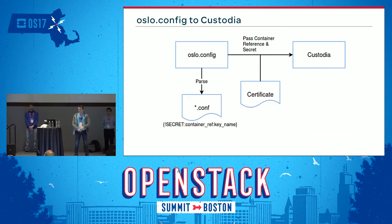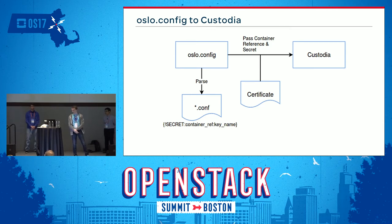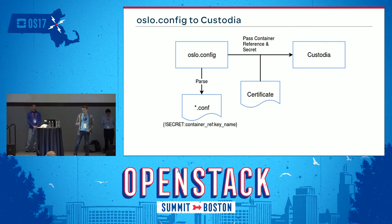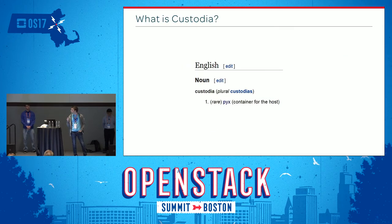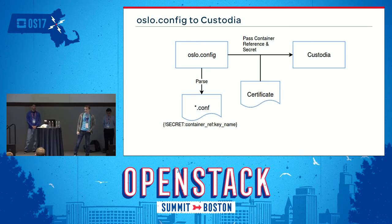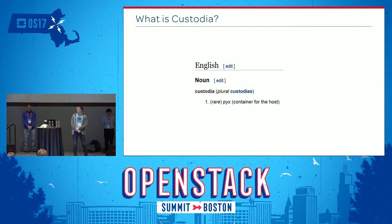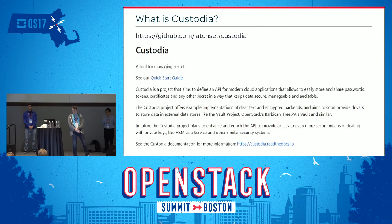The project we used for this proof of concept is called Custodia. This is the general workflow between Oslo.config and Custodia: Oslo.config parses the configuration file, reads the secret string with the reference and key name, and passes those along when it makes an authenticated call with a certificate to Custodia. Custodia is an open source project created by some Red Hat developers — it's a tool for managing secrets, working similarly to Barbican.